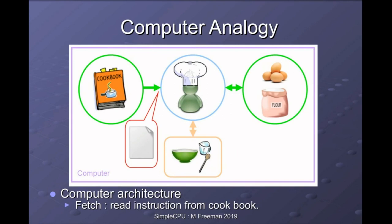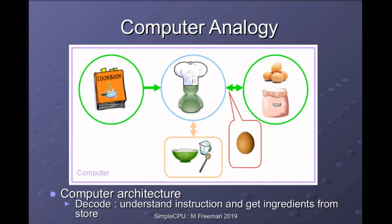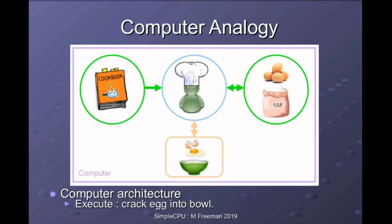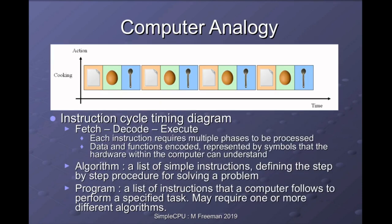The chef chooses the program to run, selects the recipe, and reads the first instruction from the cookbook. To process the instructions, the chef follows the fetch-decode-execute cycle. During the fetch phase, the chef is just reading the instruction — there's no processing, he's just reading the instruction into his mind, ready to process it. The decode phase is where the chef starts to understand what the instruction is asking him to do and fetches the data that needs to be processed. Finally, in the execute phase, the chef performs the operation — in this example, cracking the egg from the larder into the bowl. When finished, the whole fetch-decode-execute cycle repeats.